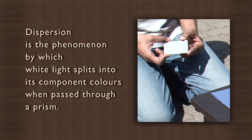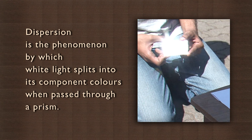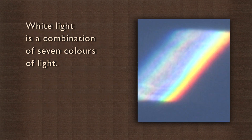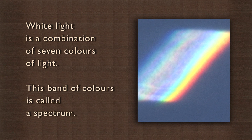This occurred because the light dispersed inside the prism. Dispersion is the phenomenon by which white light splits into its component colors when passed through a prism. This shows us that white light is a combination of seven colors of light. This band of colors is called a spectrum.